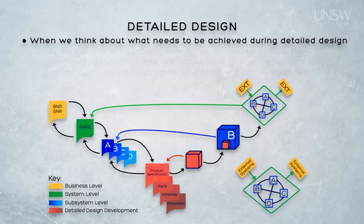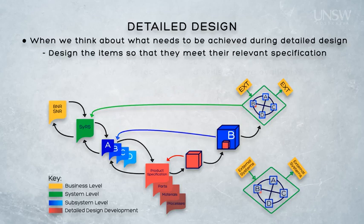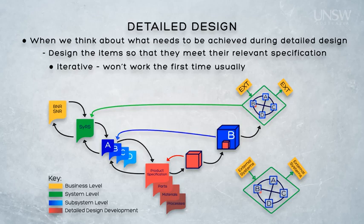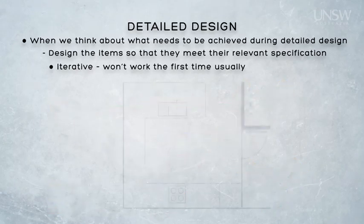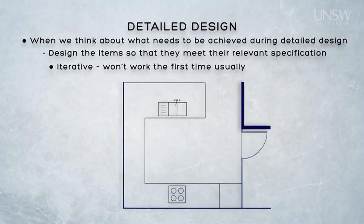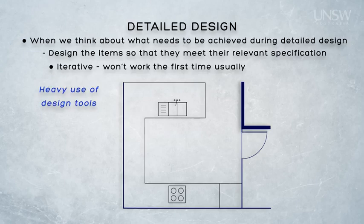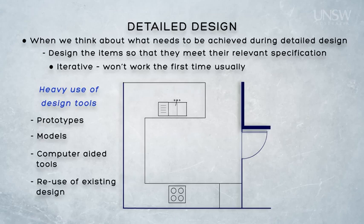Detailed design is a tough job, and it's the job traditionally associated with professional engineers. Professional engineers are expected to be able to take a specification and determine a solution that meets those requirements. It's important to emphasise that detailed design is an iterative process — very few engineers are lucky enough to come up with a perfect solution the first time. We end up designing, building, testing, learning, and repeating until we're satisfied with the result. Professional engineers will use plenty of tools to help them, including prototyping, modelling, simulation, and reusing similar designs that have worked before.